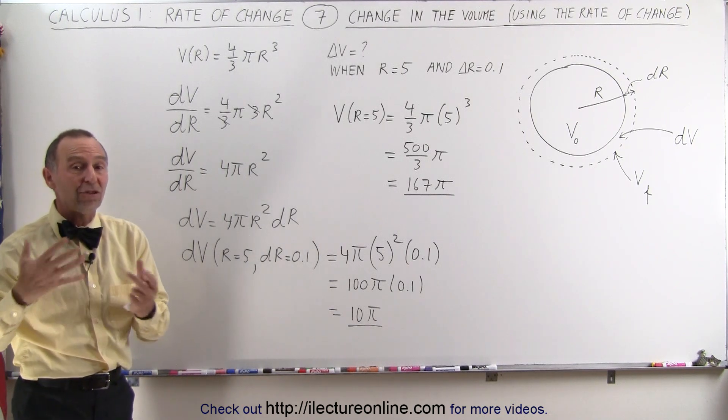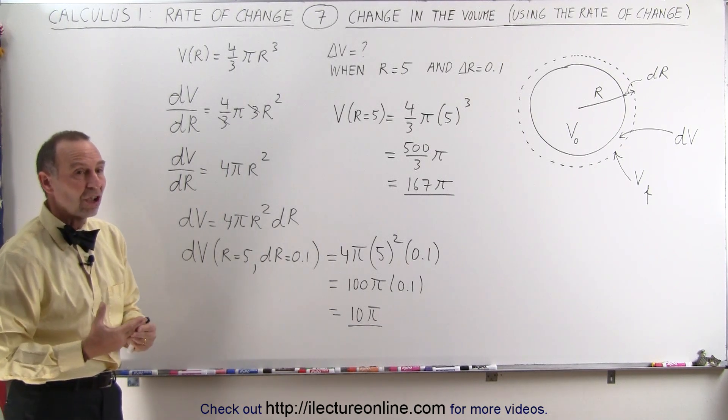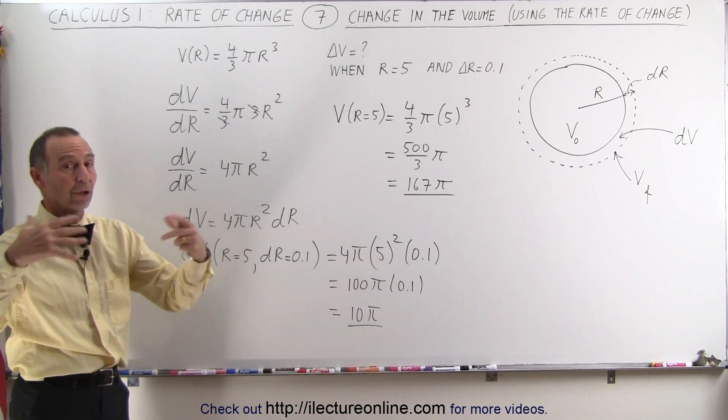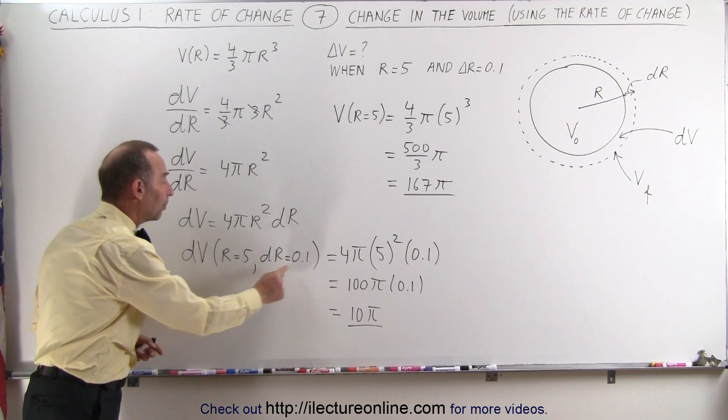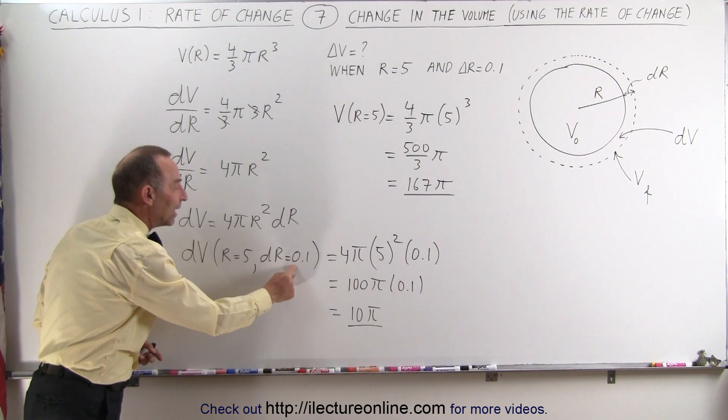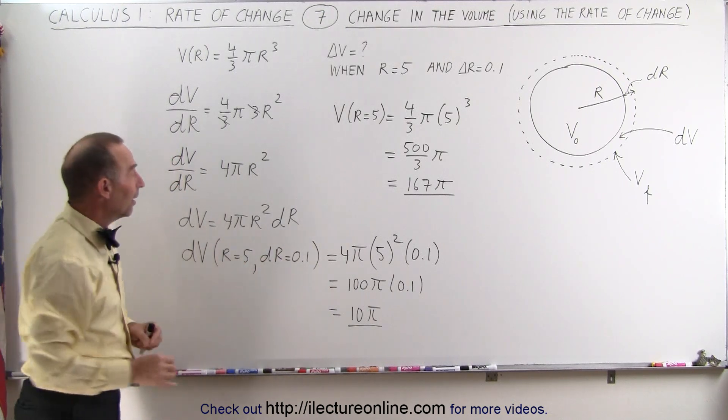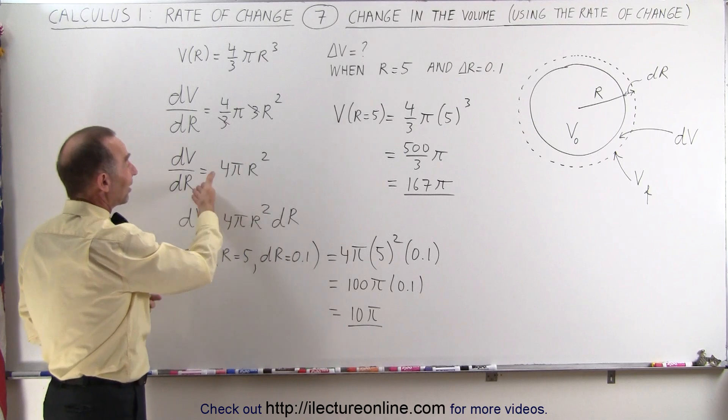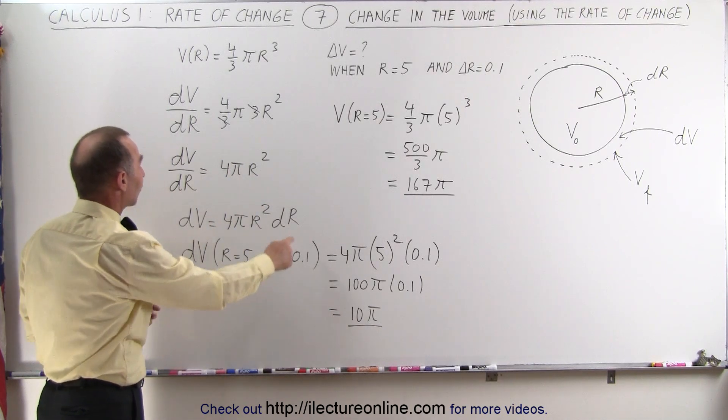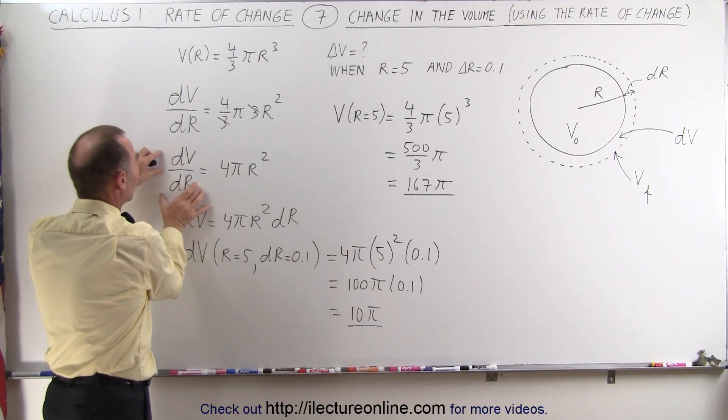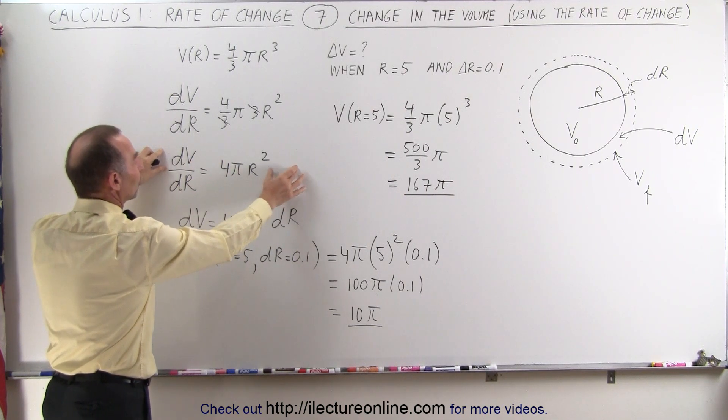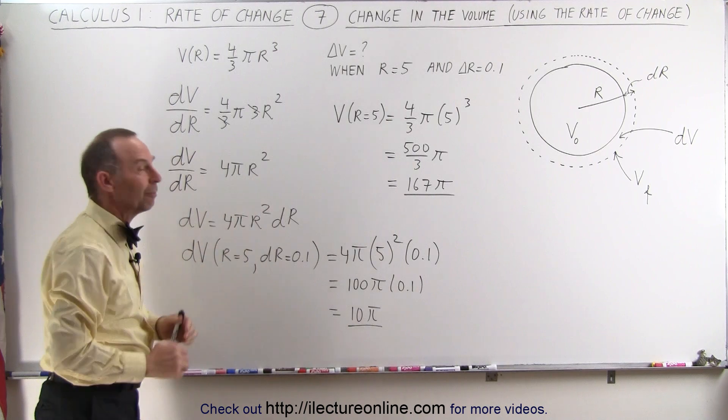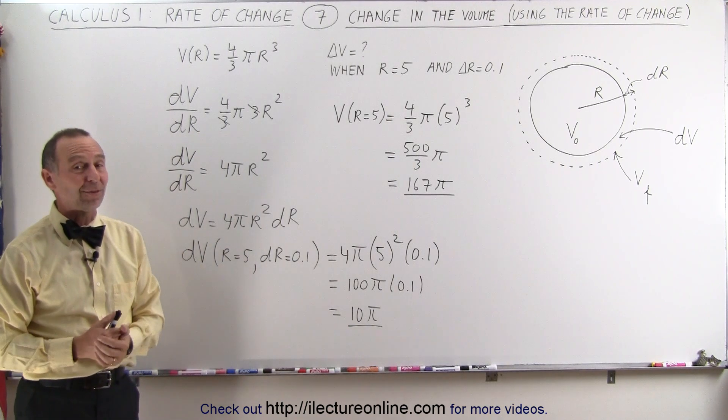So not only can we use the rate of change to find how fast things are changing relative to time or relative to another dimension, we can also find out small changes by plugging in small changes in the units that the equation is made up of. And you can see that we can actually use the same equation, but just simply displacing the dV and dr, so turning them into differentials to get additional information like that. And that's how it's done.